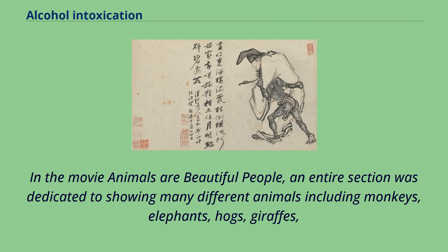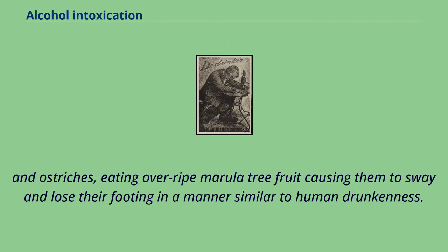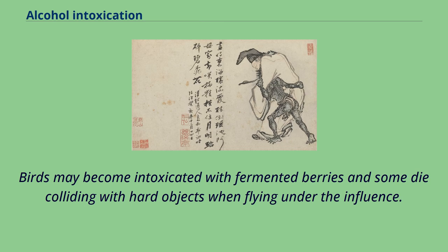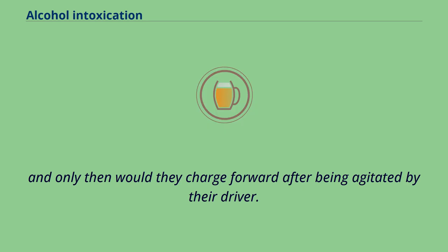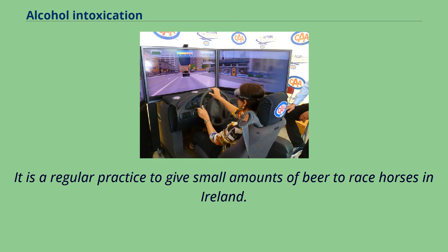In the movie Animals Are Beautiful People, an entire section was dedicated to showing many different animals including monkeys, elephants, hogs, giraffes, and ostriches eating overripe marula tree fruit, causing them to sway and lose their footing in a manner similar to human drunkenness. Birds may become intoxicated with fermented berries and some die colliding with hard objects when flying under the influence. In elephant warfare, practiced by the Greeks during the Maccabean Revolt and by Hannibal during the Punic Wars, it has been recorded that the elephants would be given wine before the attack, and only then would they charge forward after being agitated by their driver. It is a regular practice to give small amounts of beer to race horses in Ireland.